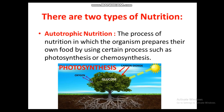Autotrophic nutrition is the process of nutrition in which the organism prepares its own food by using certain processes such as photosynthesis or chemosynthesis. For example, a plant prepares its own food — it stays in place and uses carbon dioxide, water, and sunlight to prepare its food. This type of nutrition is known as autotrophic nutrition.